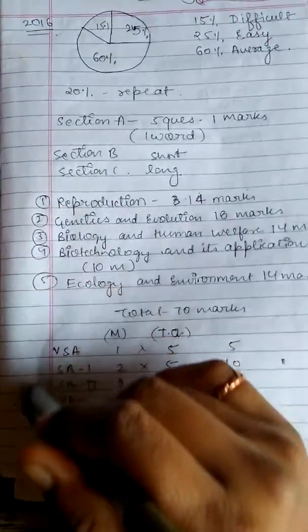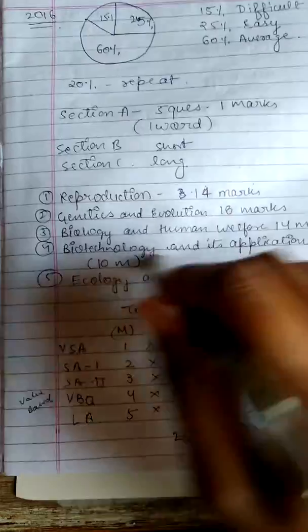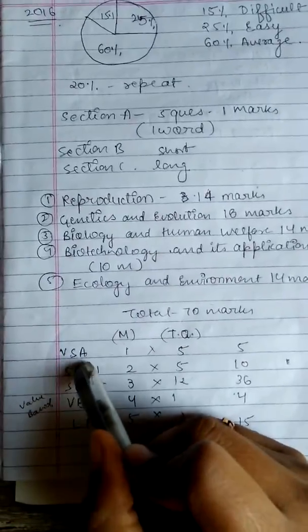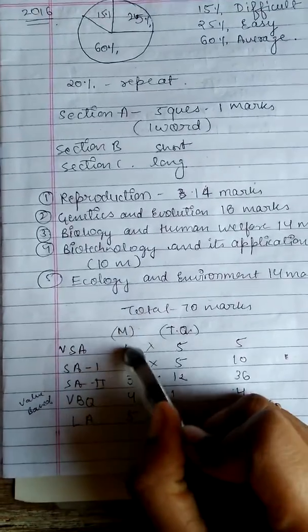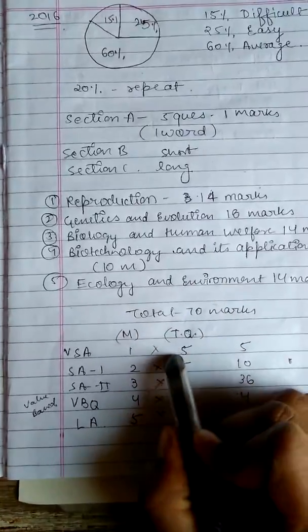If we can see how many questions and how many marks we can do, very short answers are 1 mark. And total questions are 5.